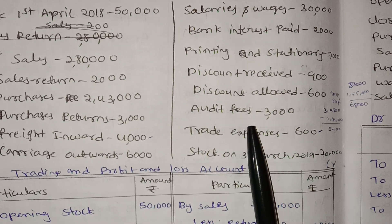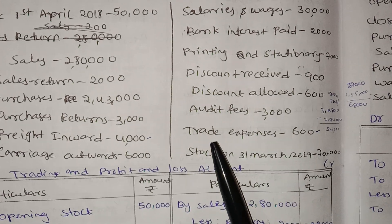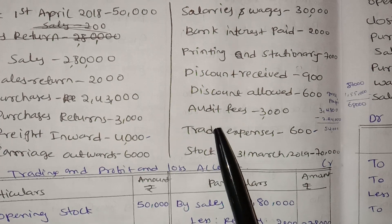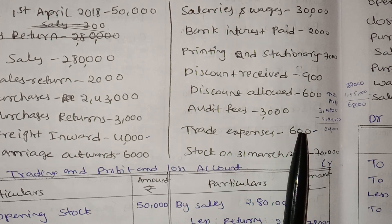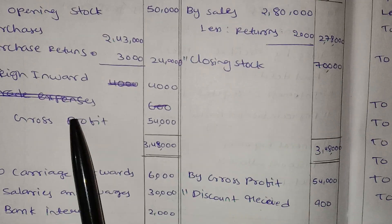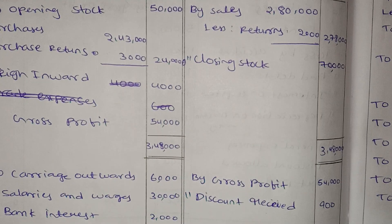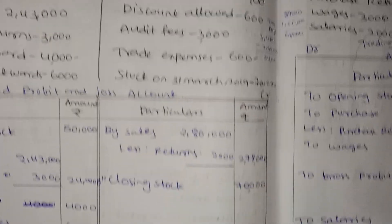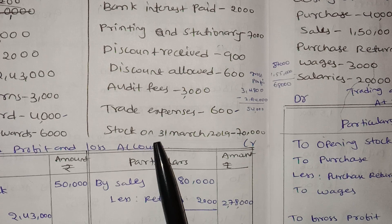At the office level, we have to pay expenses. What is the case for trade expenses? You can see it in the previous video. Trade expenses — what is the case for general expenses? Here you can see it. General expenses — you can see it in the trading account. Only trading expenses go here. Next, stock on 31st March — this is the closing stock.